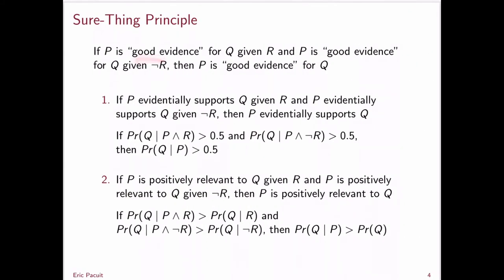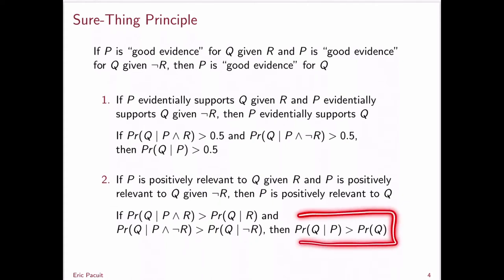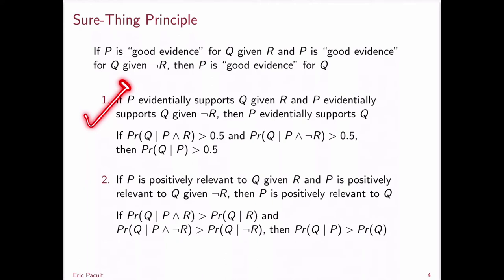It turns out that if by good evidence we mean evidential support, then the statement is true. In any stochastic truth table, if the probability of Q given P and R is greater than 0.5, and the probability of Q given P and not-R is greater than 0.5, then the probability of Q given P must be greater than 0.5. However, the statement does not hold if we're talking about positive relevance — we'll find a stochastic truth table where P is positively relevant to Q given R, and given not-R, but P is not positively relevant to Q unconditionally.